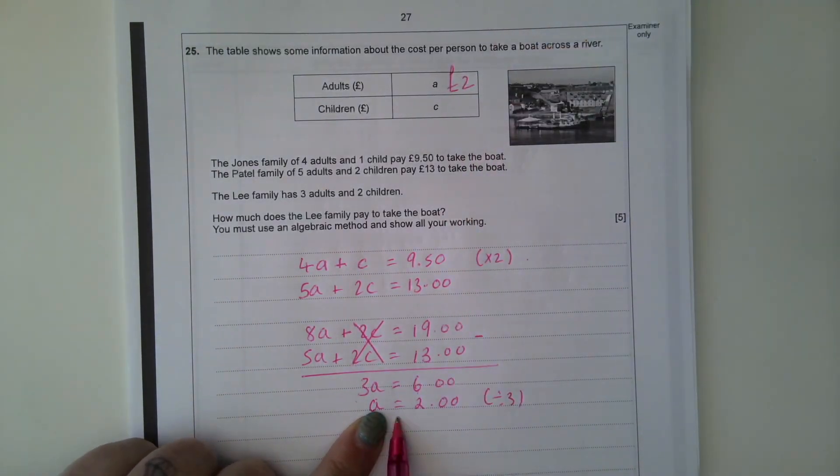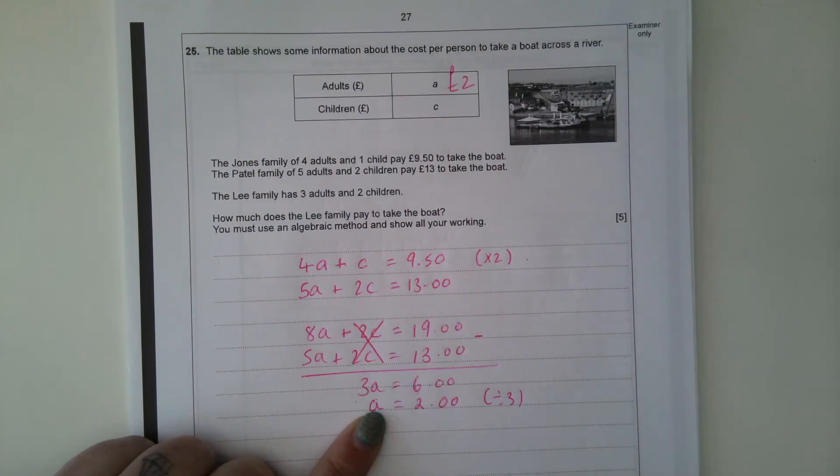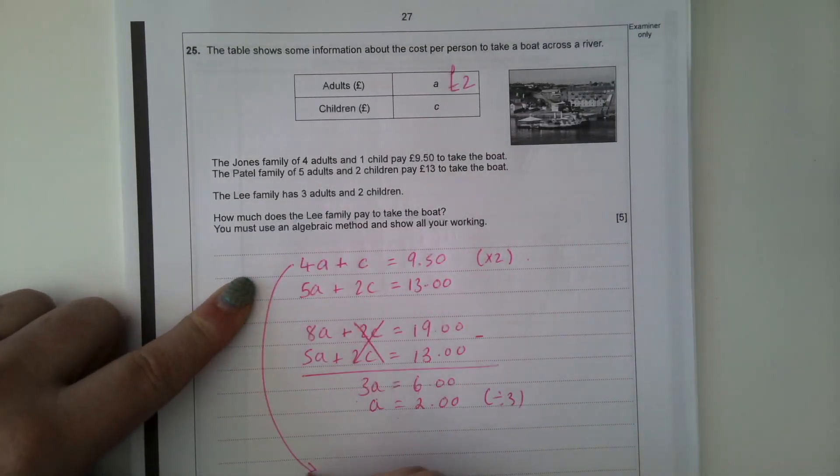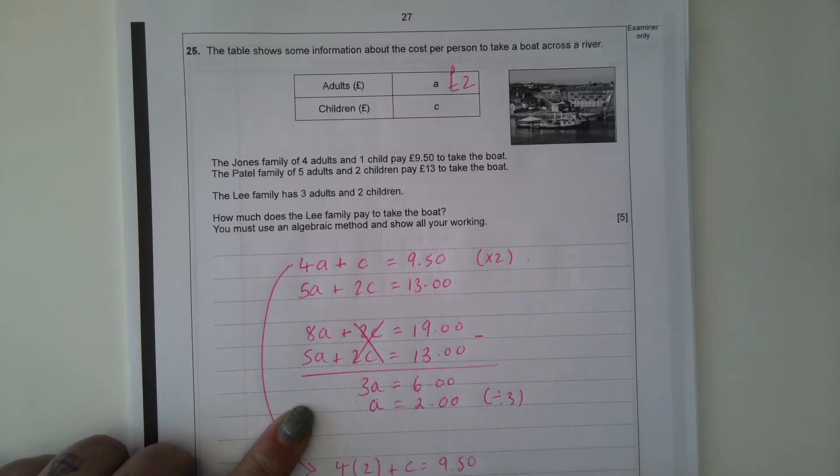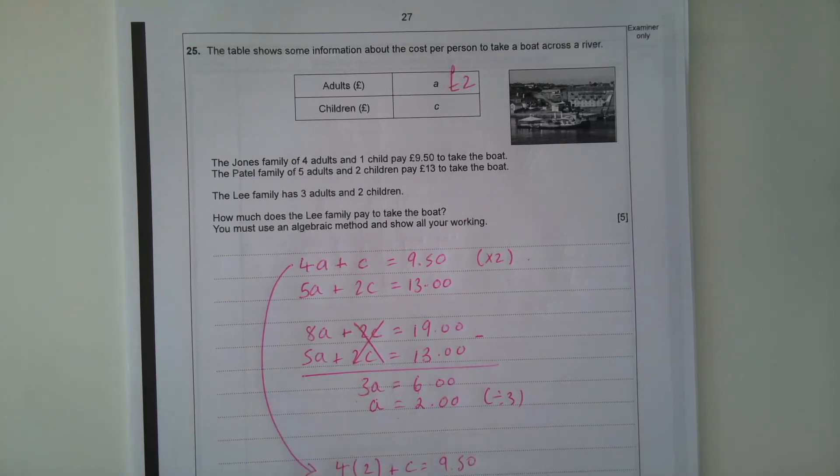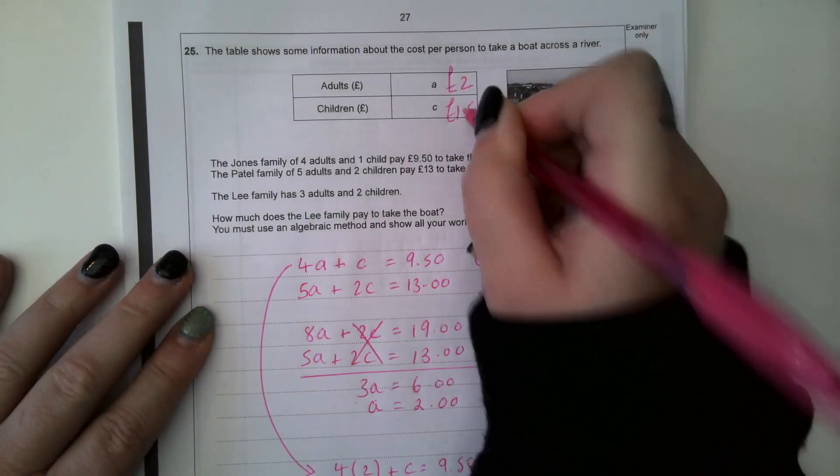So now that I know an adult is £2, I'm going to substitute it into one of these equations to find out what a child is. So let's use this first equation. So 4 times 2 plus C is £9.50. 8 plus C is £9.50. So C is £9.50 subtract 8, which is £1.50. So an adult is £2, a child is £1.50.